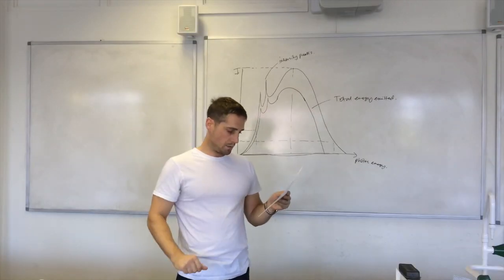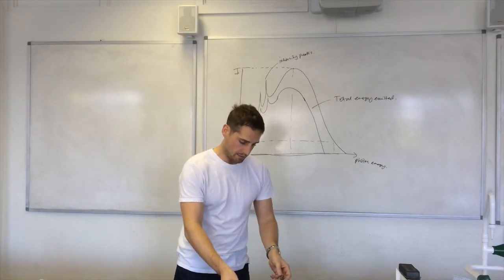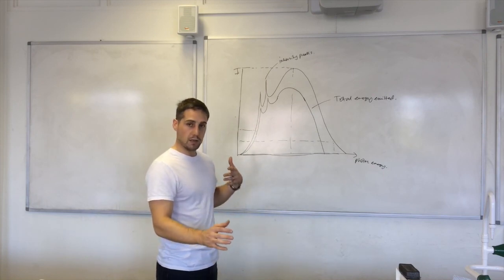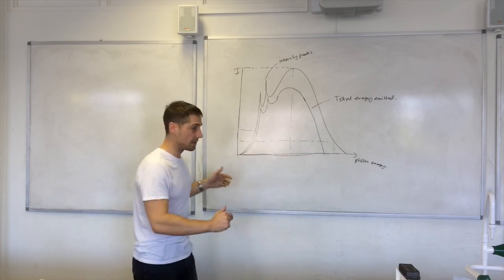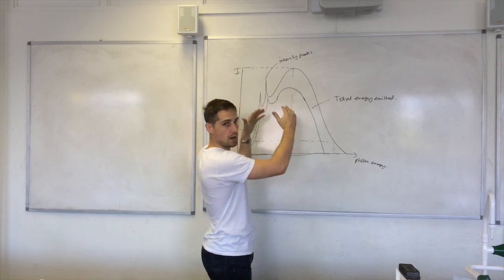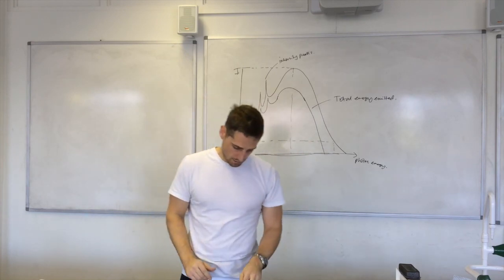You'll also have the tube current and that controls how many electrons are fired at the anode per unit time. So that will affect the total area under the graph. Look at how that affects it.